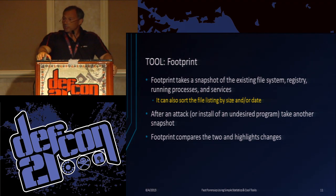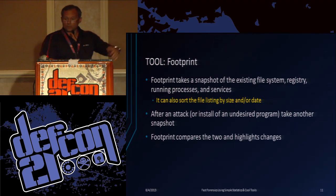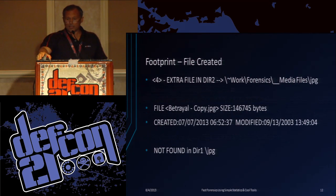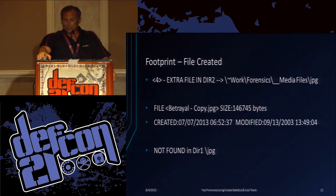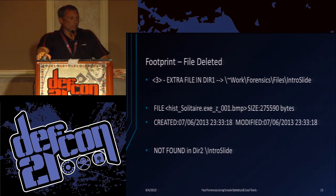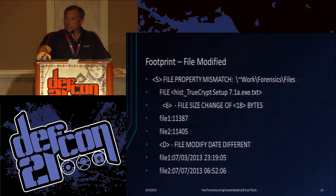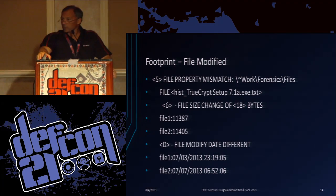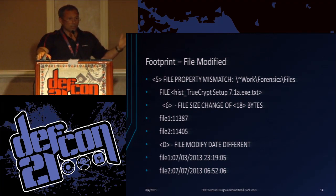Footprint can compare two different log files. Here are all the files, what has changed — same thing with registry keys, processes and services. This is just a sample output showing how it indicates if a file was deleted or added. It's a very textual type program. Here's where it shows what it looks like when a file is modified. It creates a big or small log file depending on how many changes have occurred since the last footprint.